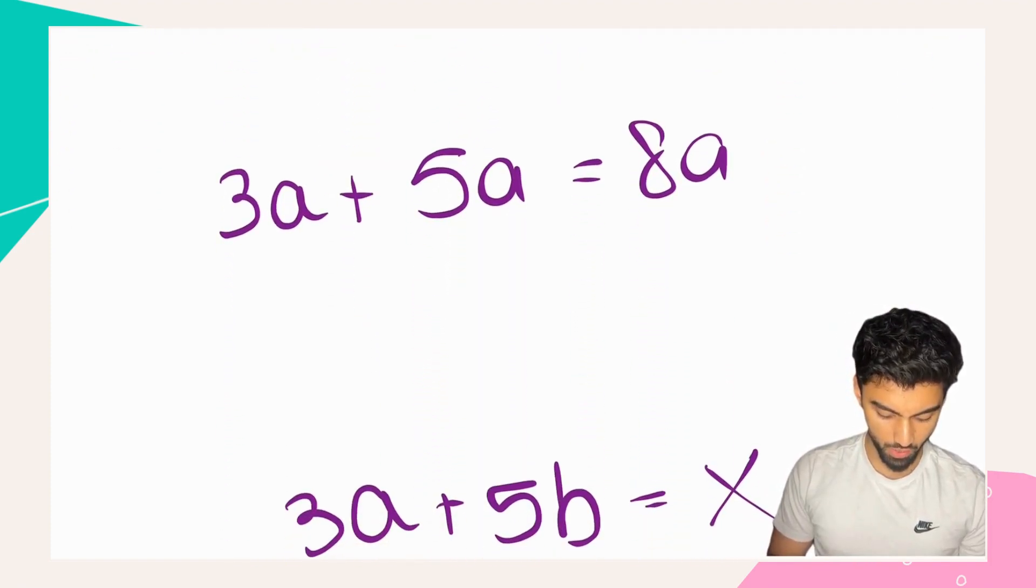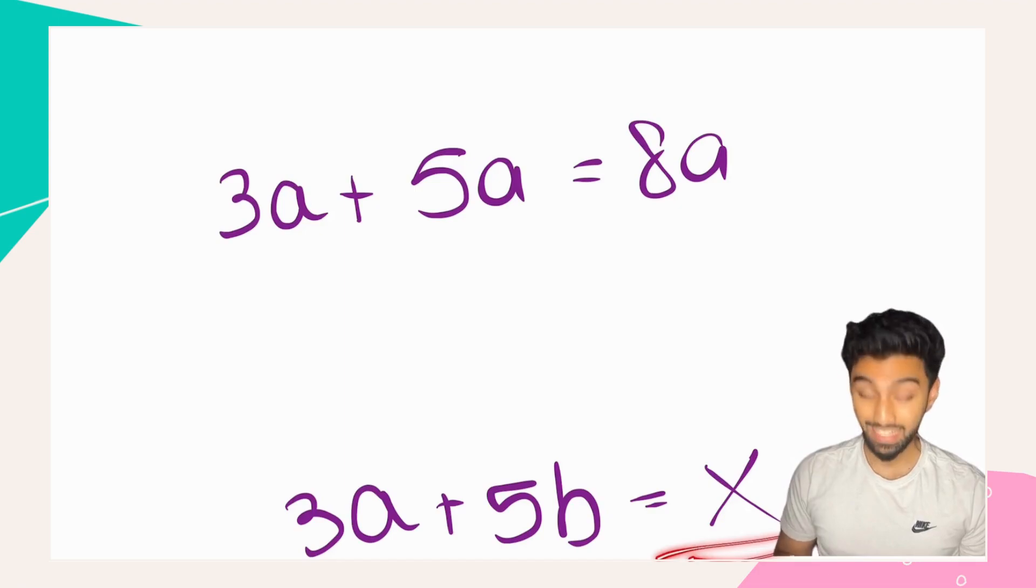When we're adding thirds, we can use the same principles of adding like terms in algebra. For example, we know that 3a plus 5a gives 8a. However, 3a plus 5b cannot be simplified.